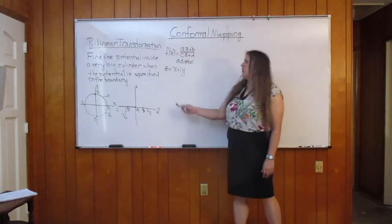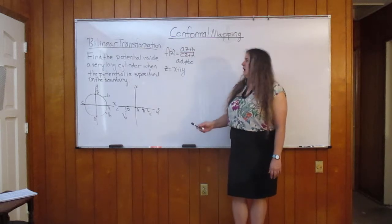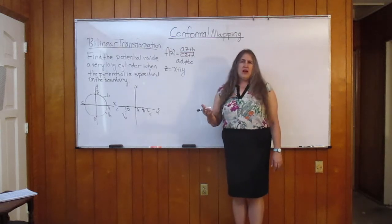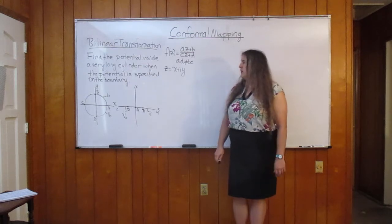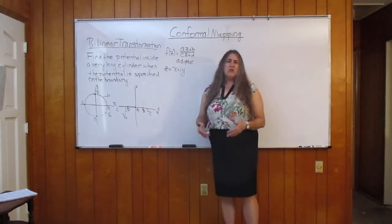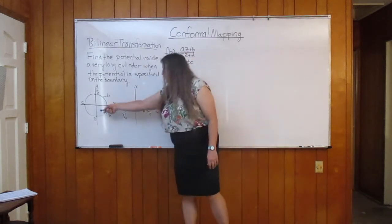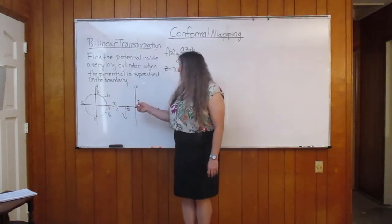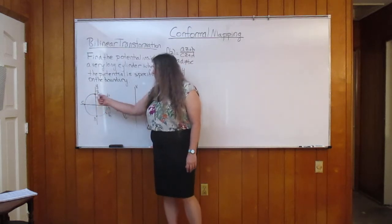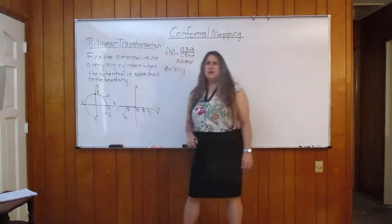We concluded with the problem of determining the potential solution of a very long cylinder that has the potential specified on the boundary. Because it's a very long cylinder, it's essentially a two-dimensional problem, so we're looking at a circle. In a particular case, the upper half was grounded and the lower half was at V0.